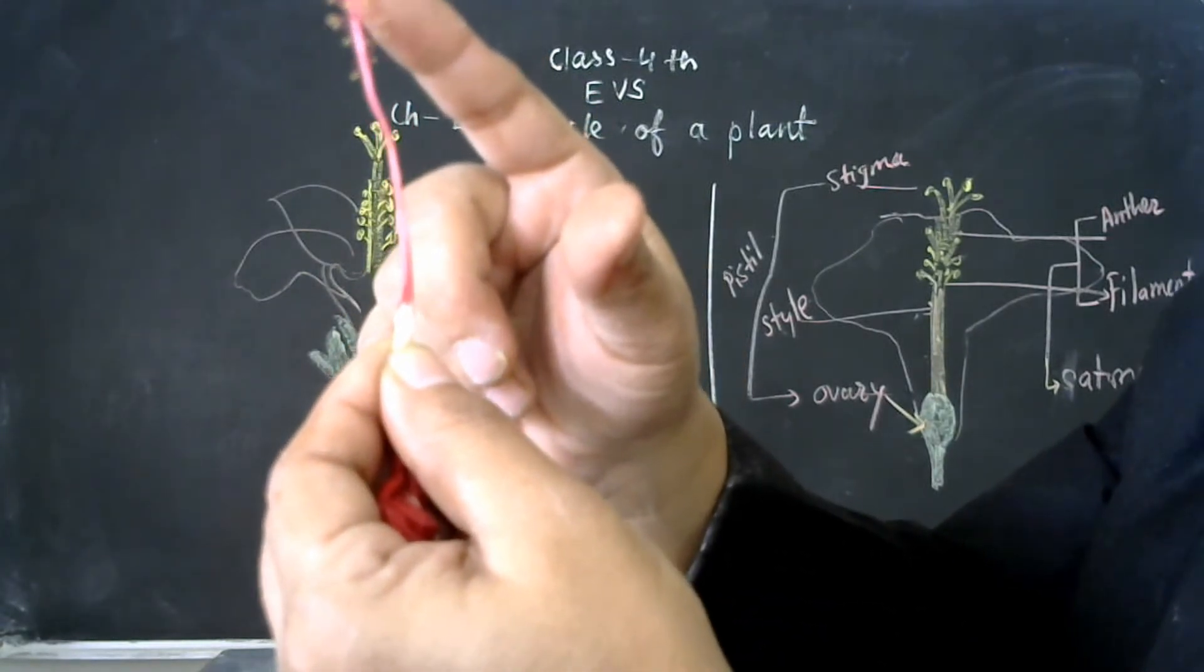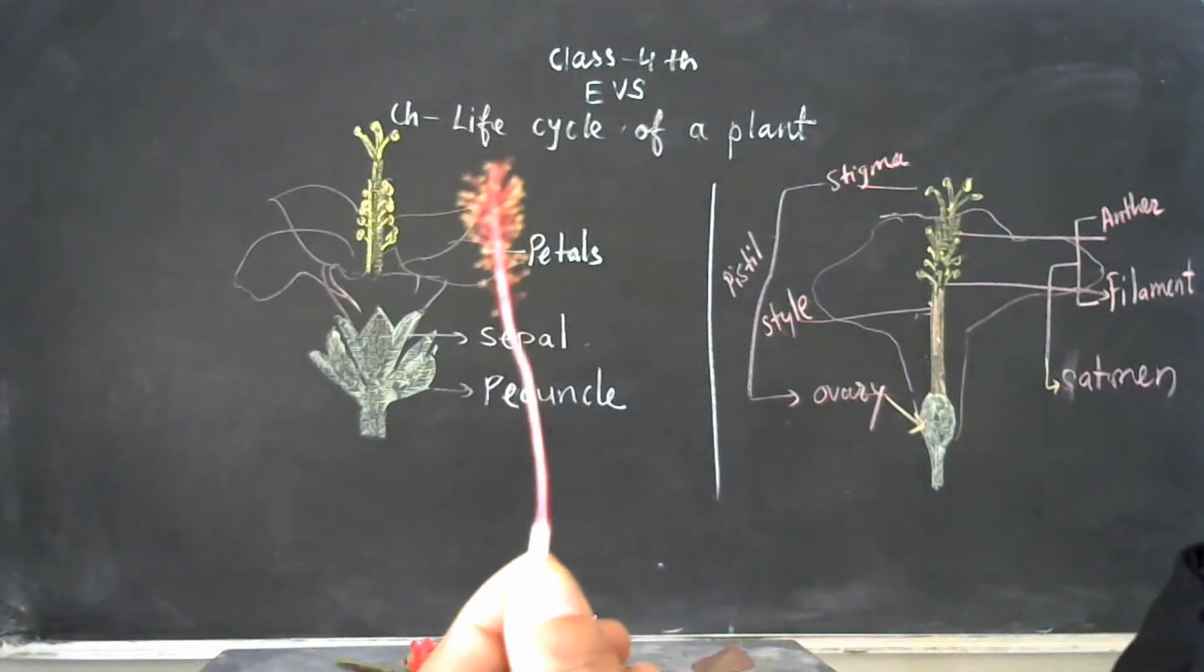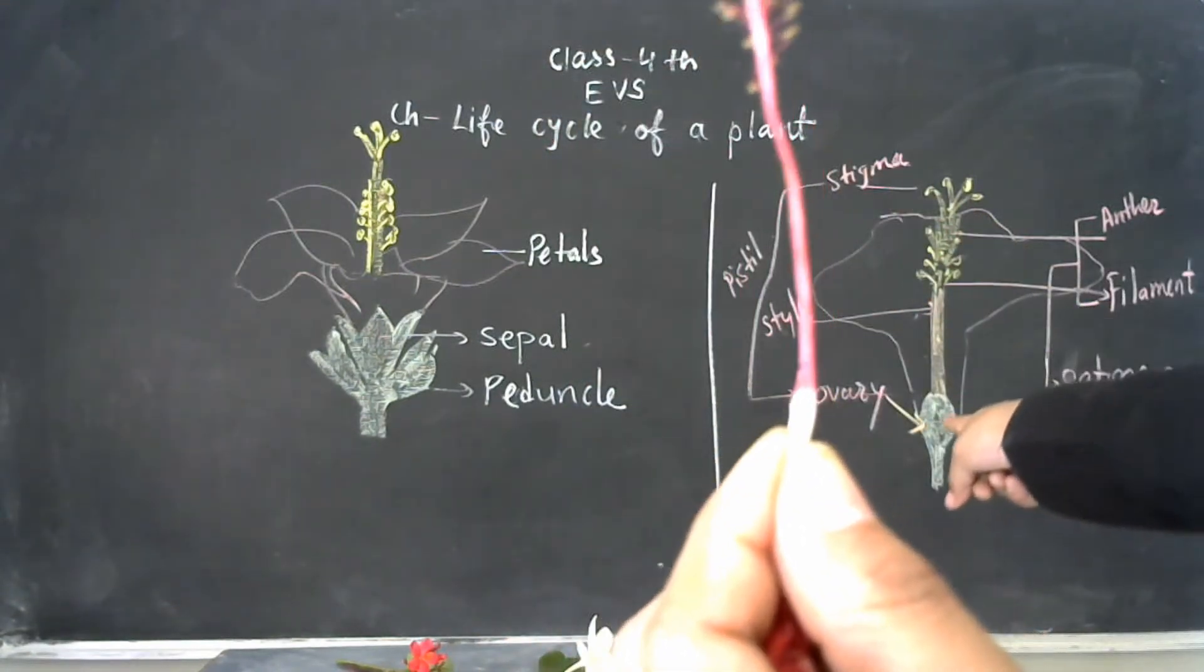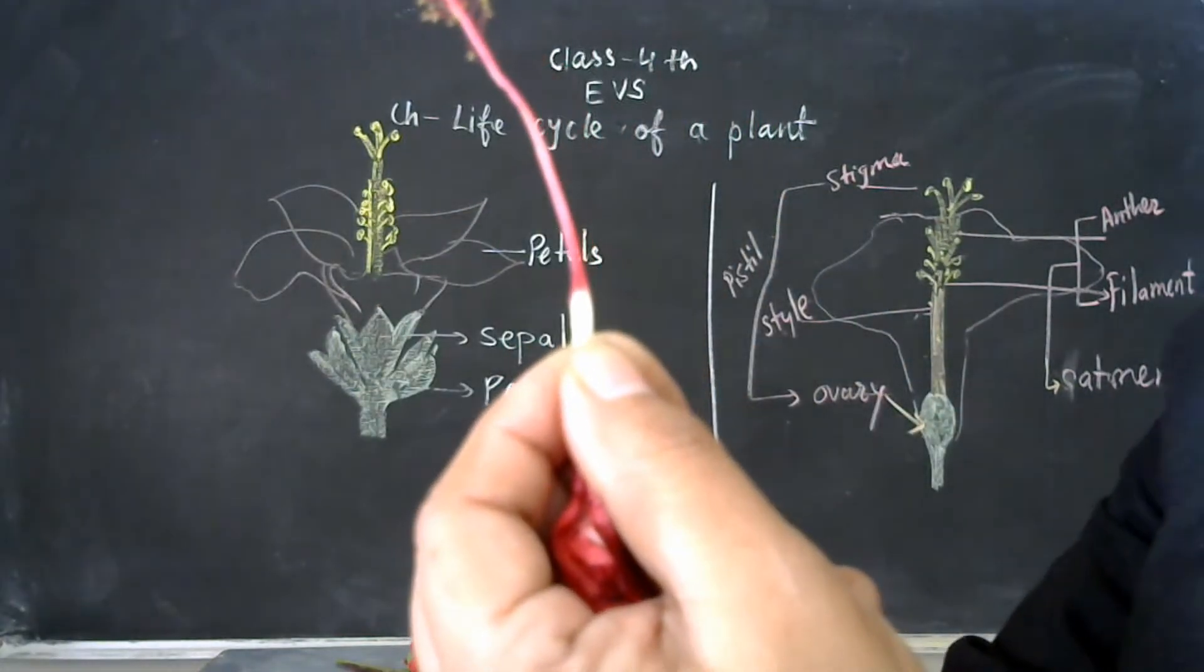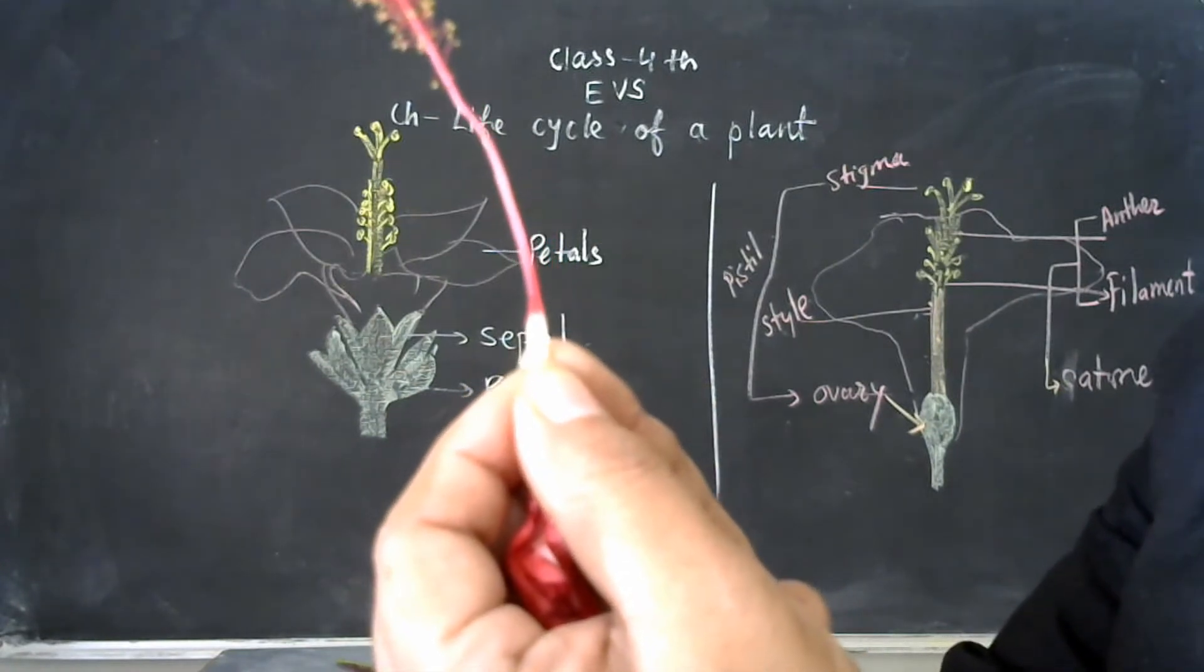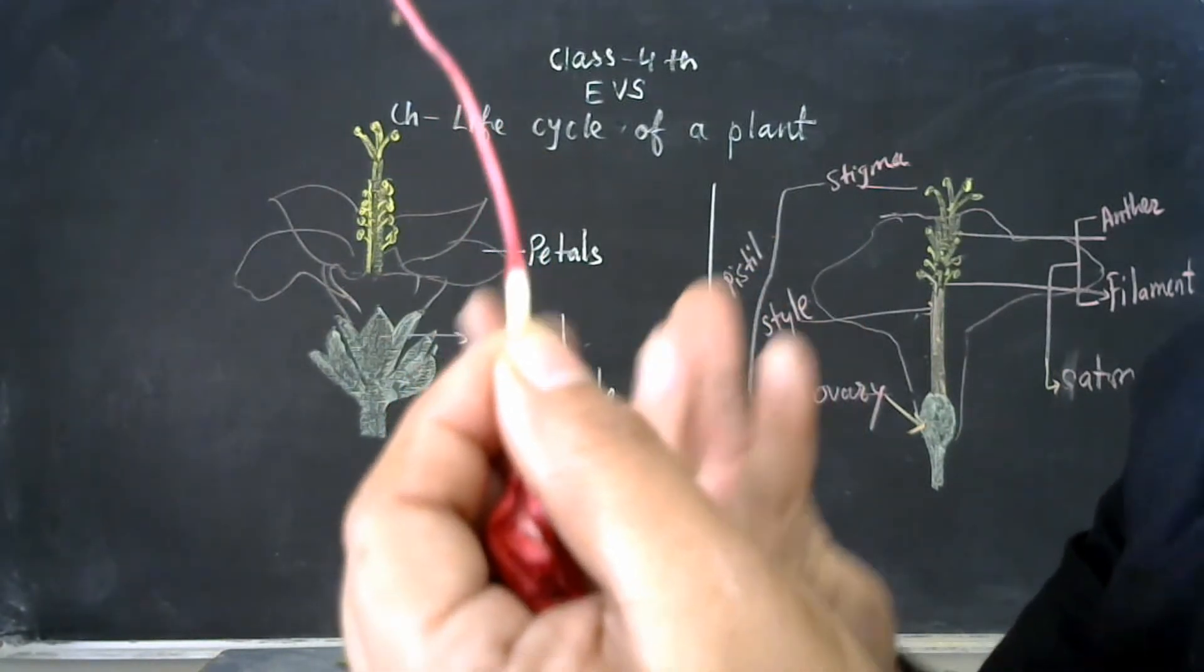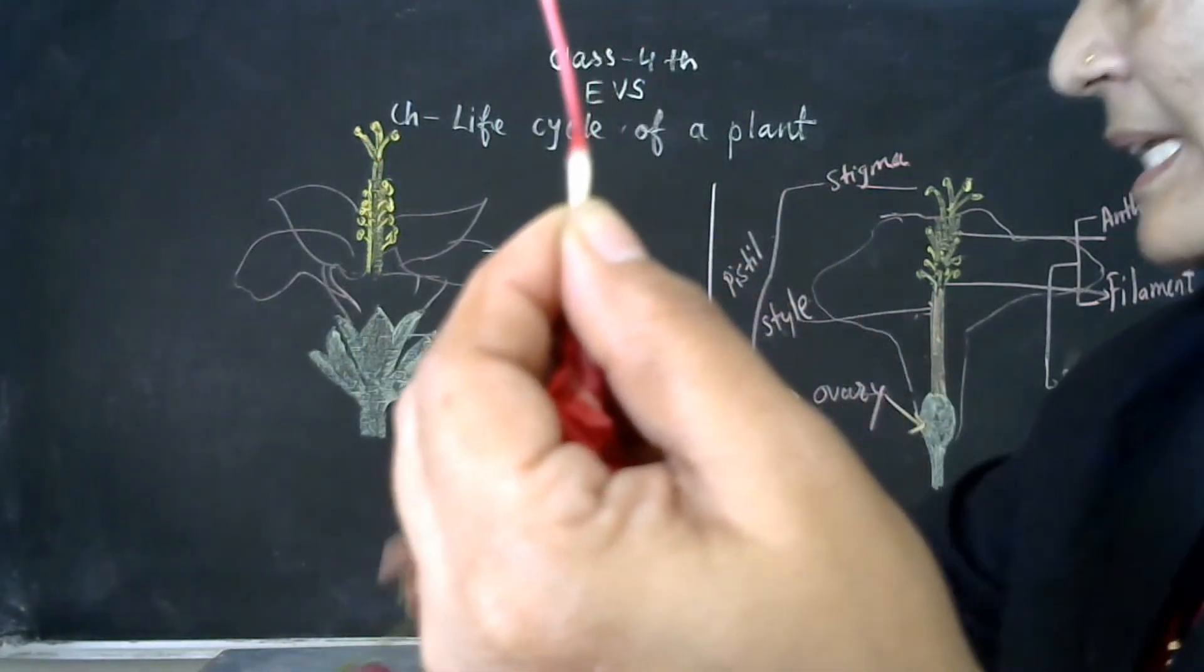Pollen grains from anther and ovules meet each other in this ovary, same like that. And after that, the ovary swells up like an egg, the ovary you can see in the flower. And this type of egg is actually the early stage of fruit of that plant. And here you can see the fruit.